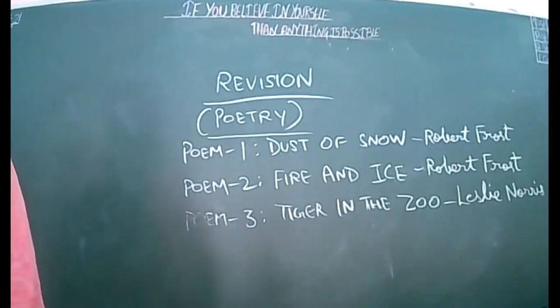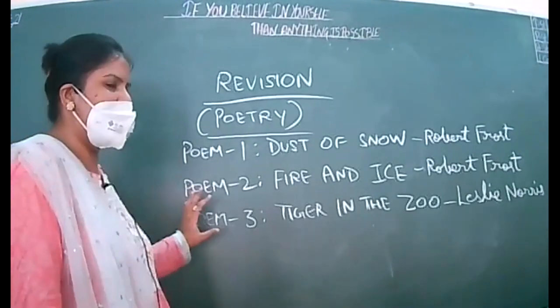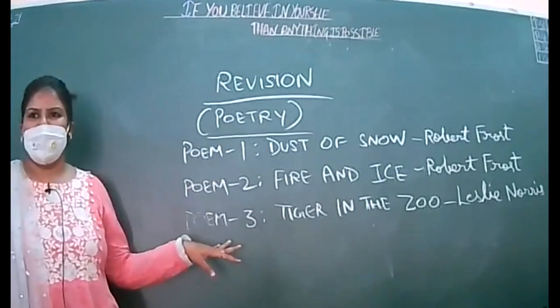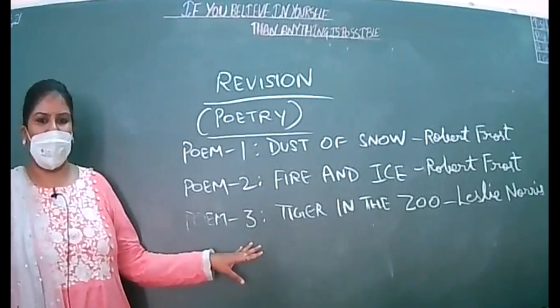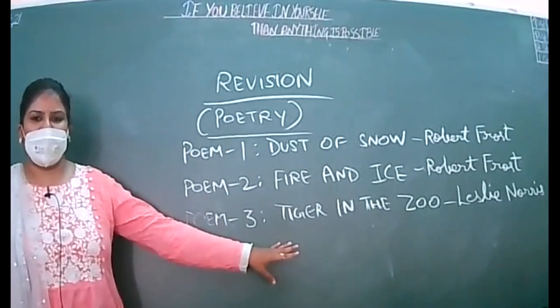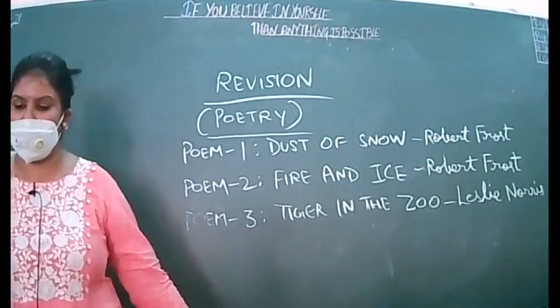Different beliefs are portrayed in this poem, Fire and Ice. Just because we have done this in detail, I'm giving the brief description. Our concentration will be MCQs mainly. Last poem, Poem Number 3: Tiger in the Zoo by Leslie Norris.